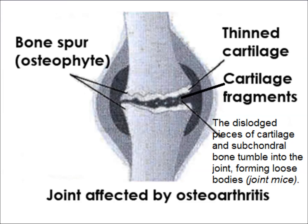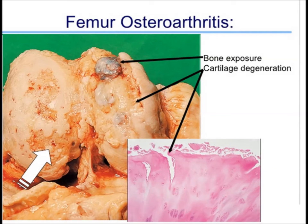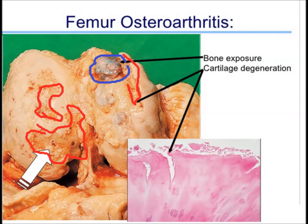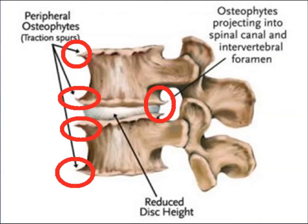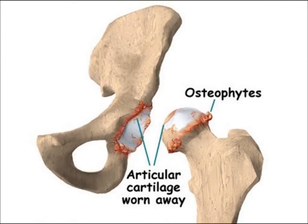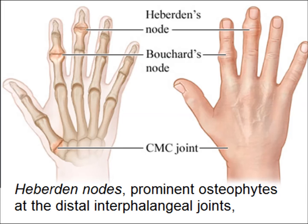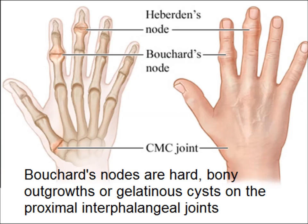There are osteophytes — bony spurs — and dislodged pieces of degenerated cartilage are called joint mice. Bone exposure and cartilage degeneration lead to roughening of the articular surface. These bone spurs project from the sides of the spine and may be peripheral or may project into the spinal canal, causing irritation of the nerves. Osteophytes are also found around the edge of the head of the femur. These osteophytes are called Heberden nodes if they involve the distal interphalangeal joints, and Bouchard nodes if they involve the proximal interphalangeal joints.